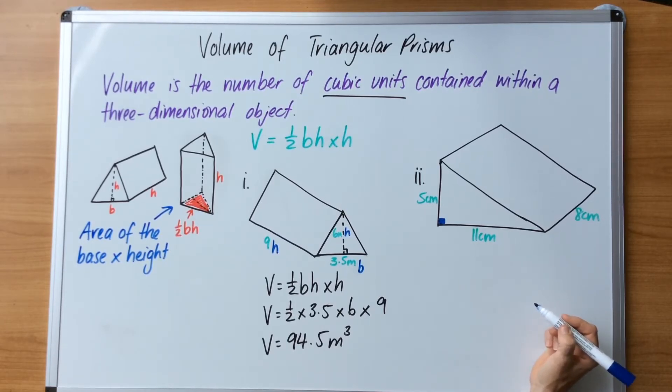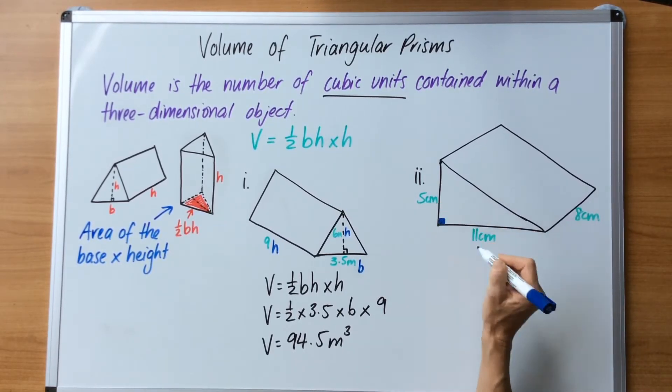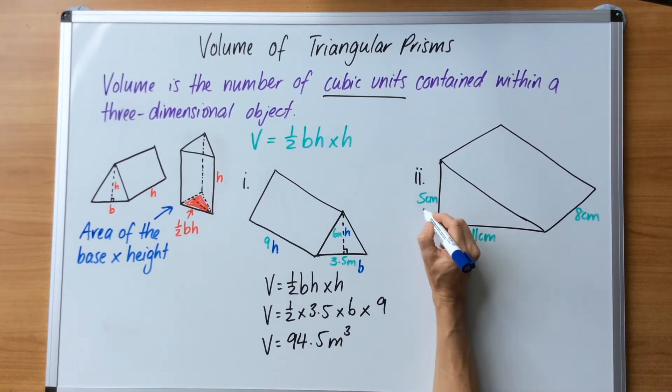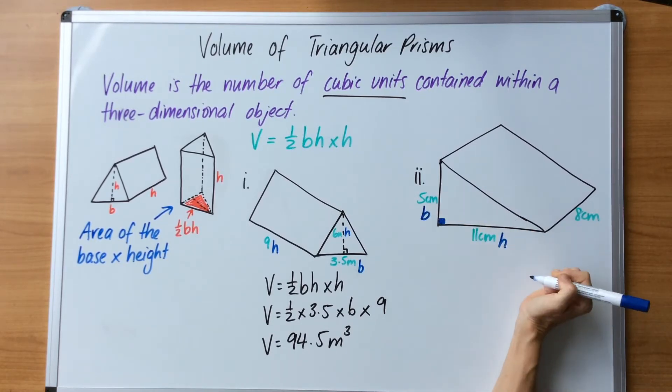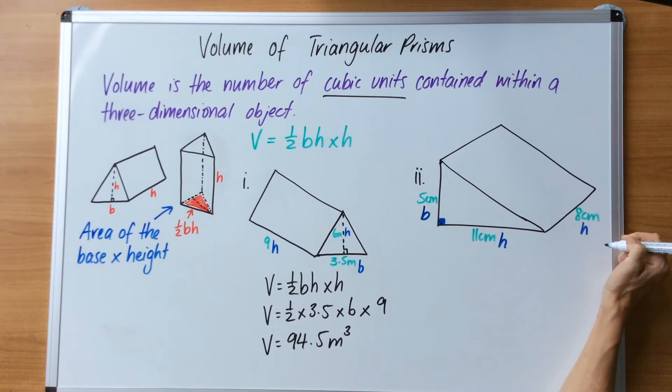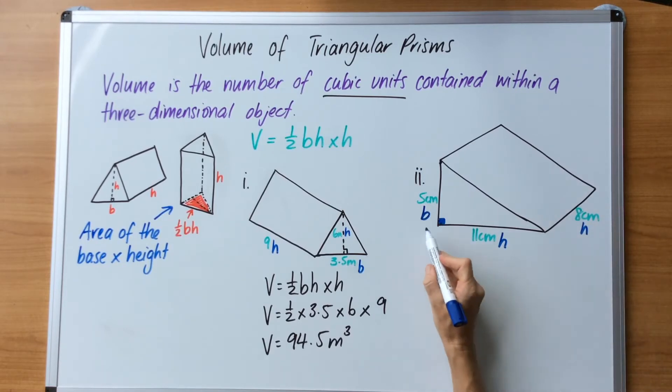This could be the base or the height or vice versa. I think I might call this the base and this the height, and this 8 is the height of the prism. It doesn't matter which way that goes around when there's a 90 degree angle - it can be either way.